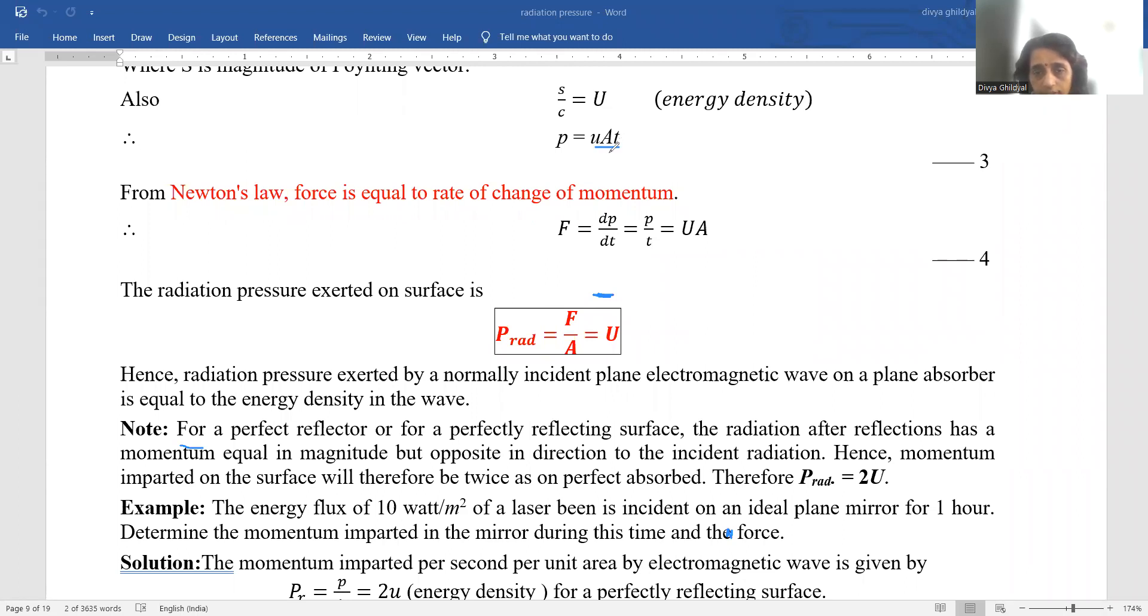If I differentiate this with respect to t. This t will d by dt of this expression will be equal to p upon t which is equal to u a.